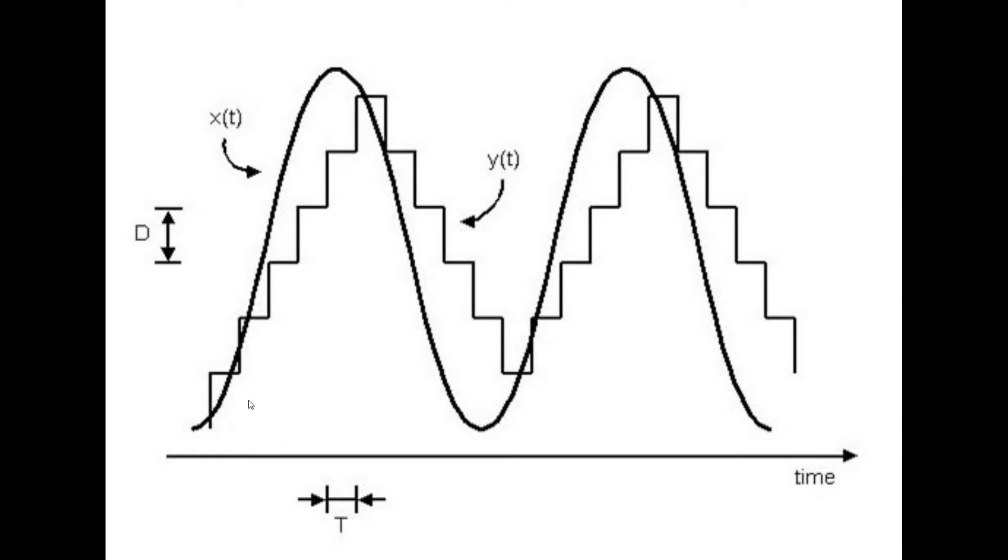And so with delta modulation, this is one of the methods that we can do. So we take a point, compare it with our original signal, and if it's lower than it, then we increase it by step size, or change it by step size. And if it's higher than it, then we decrease it. That's as far as delta modulation goes.